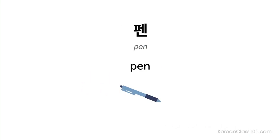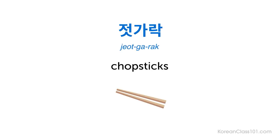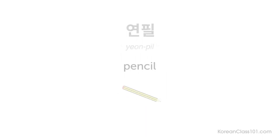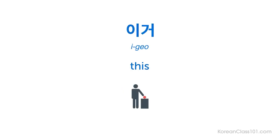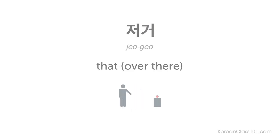Let's review the key vocabulary. Pen — 펜. Chopsticks — 젓가락. Pencil — 연필. 이거 — this. 저거 — that over there.